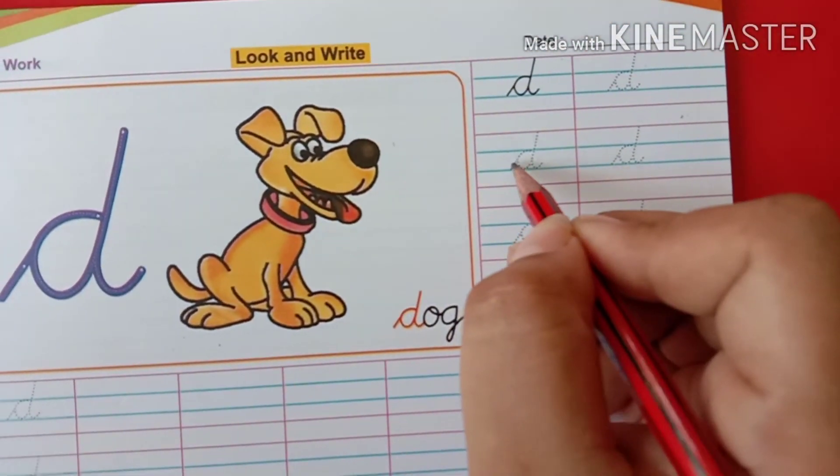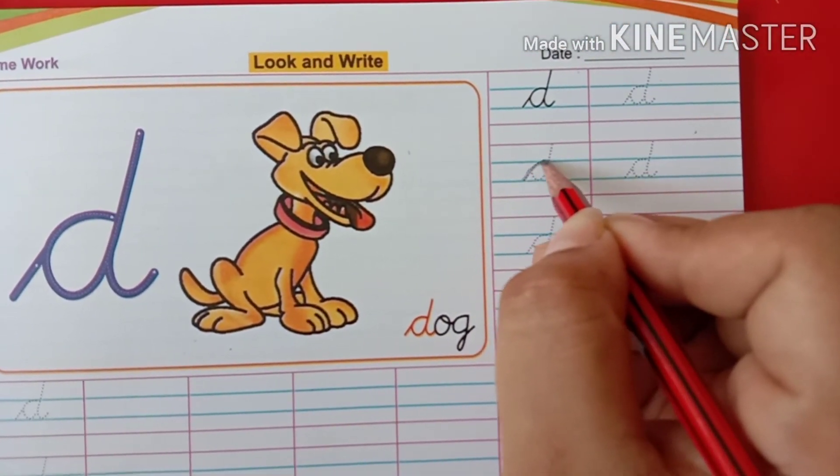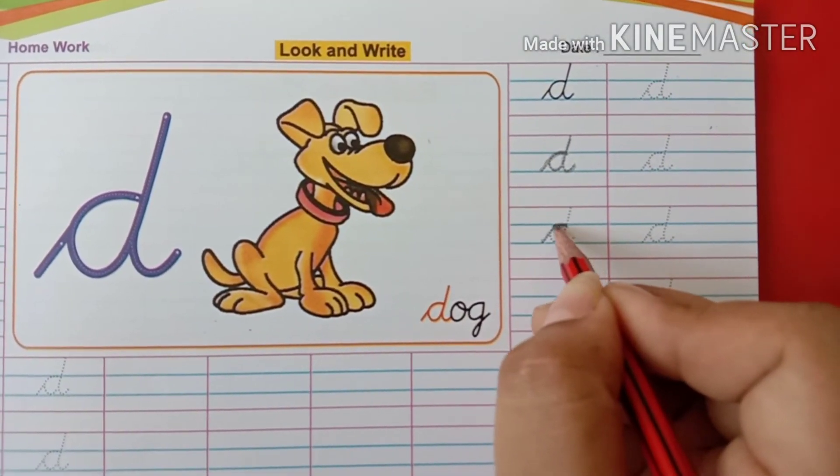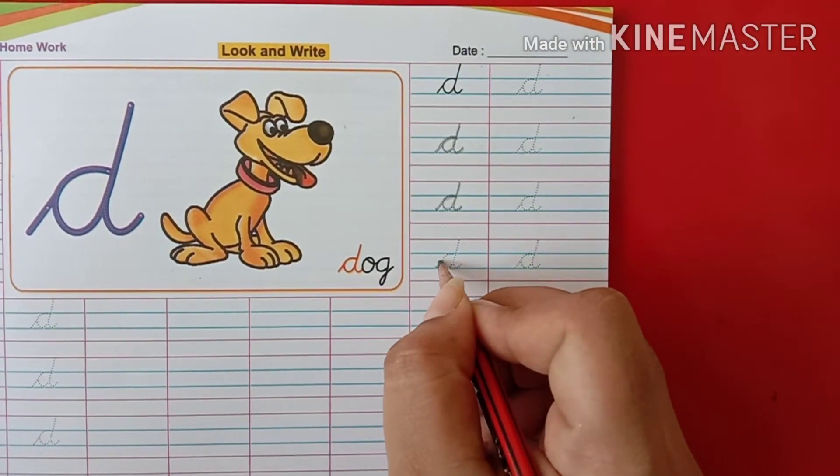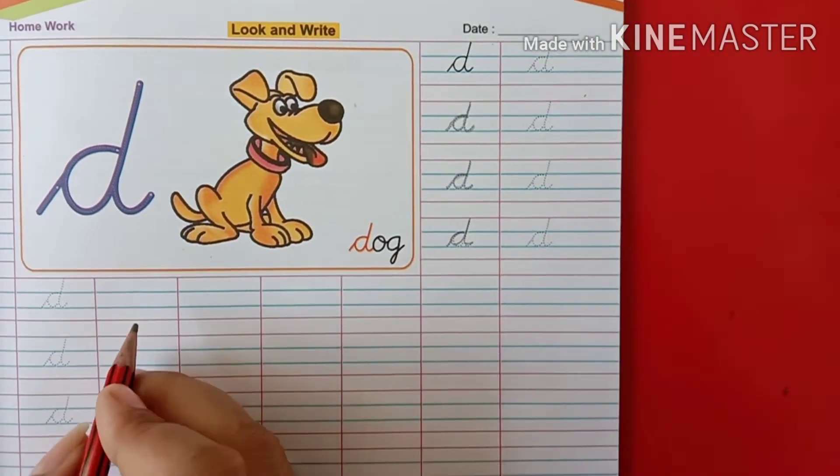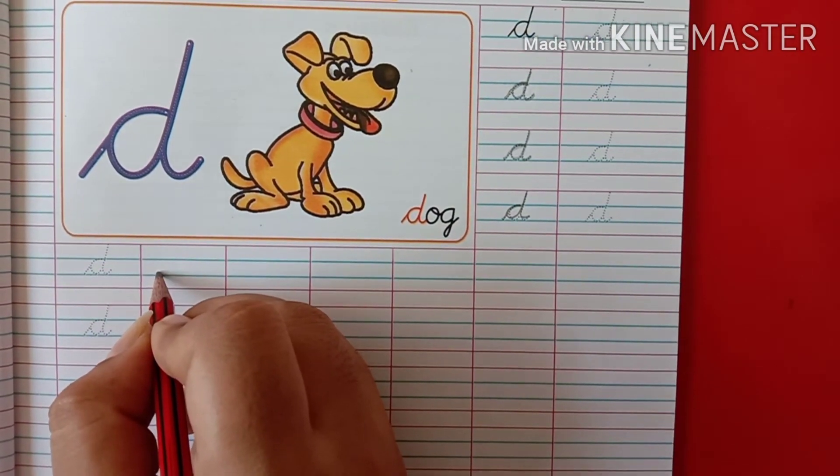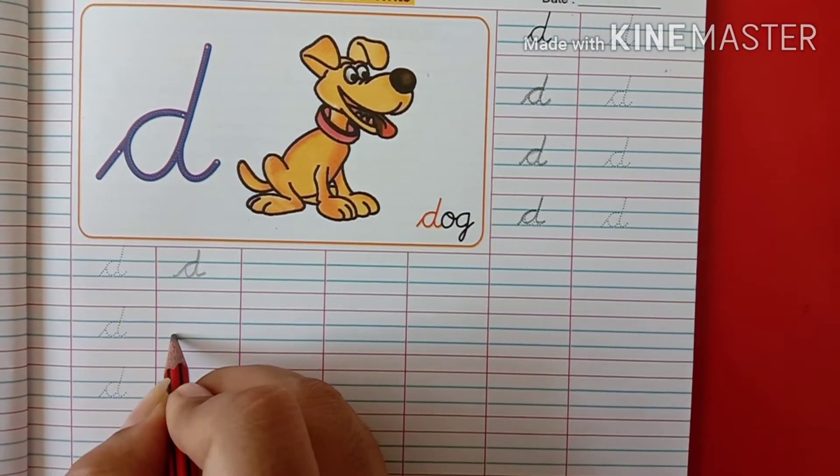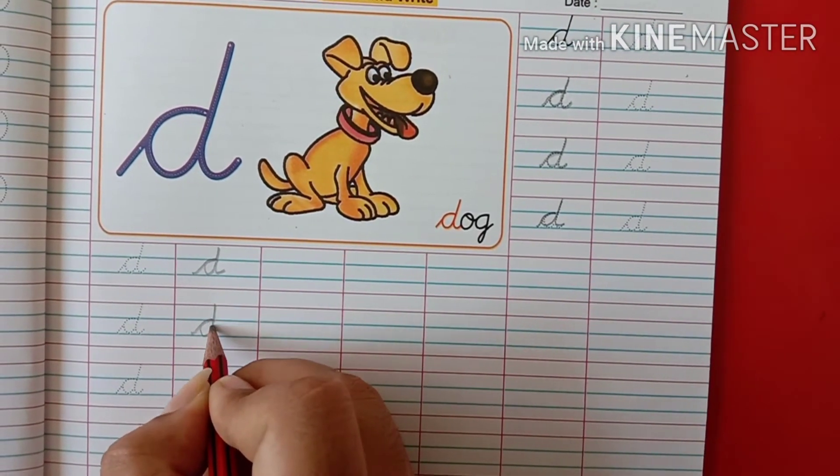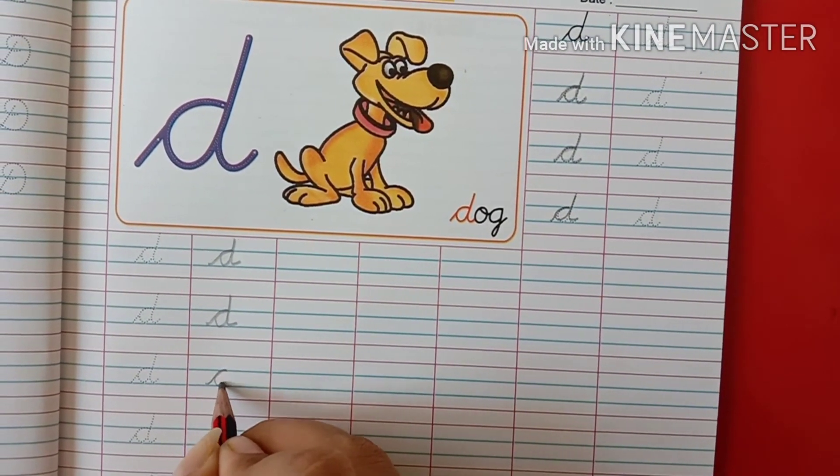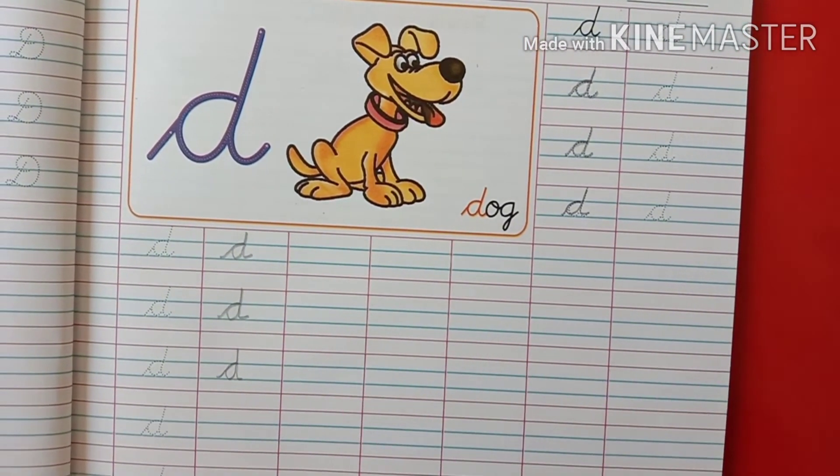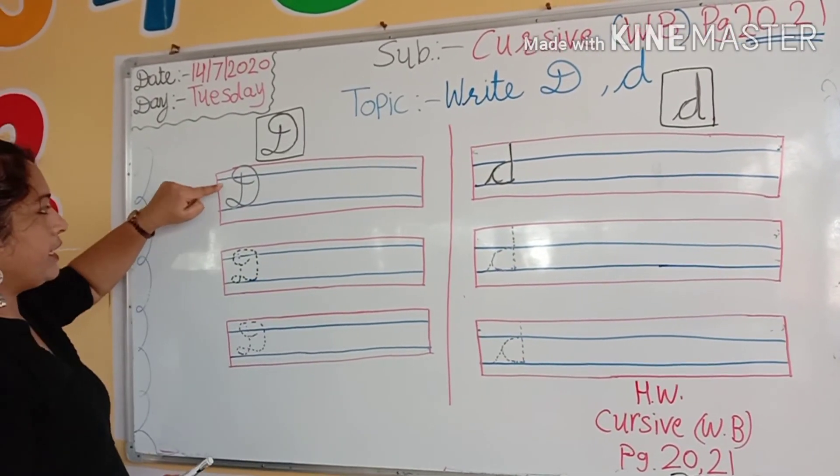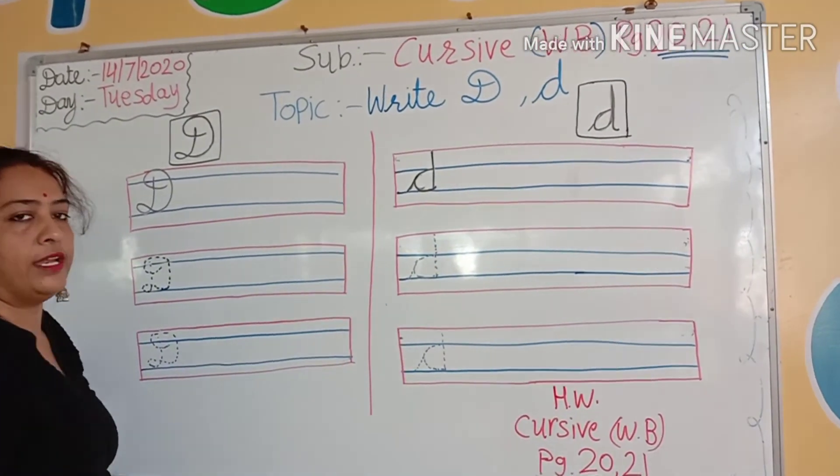Okay kids, now we will write here small d. What we will write? Small d. D for dog. So let's start it.